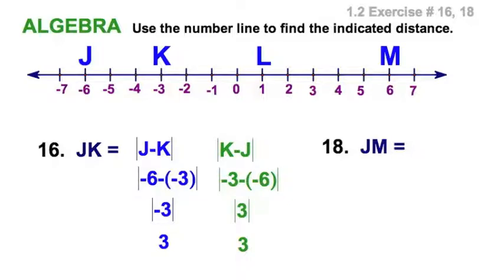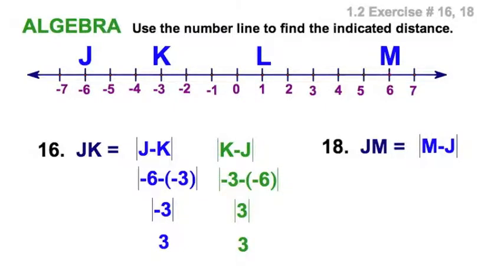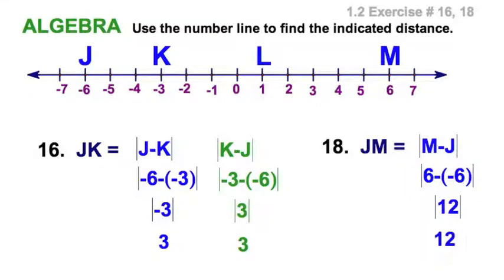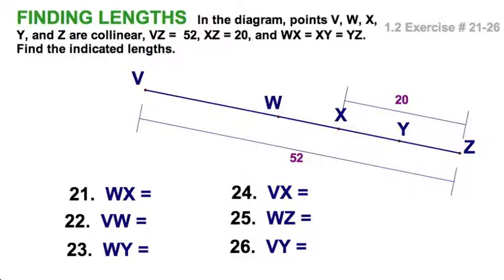Either way it's the same. Personally, when using a number line, I'll take the number on the right and subtract the number on the left — that way I always get a positive outcome, which negates the need for the absolute value. Let's be formal though. For JM, we'll take the value of M and subtract J. You can intuitively see six units to the right of zero and six units to the left of zero — a distance of 12. There you have the values for JK and JM.